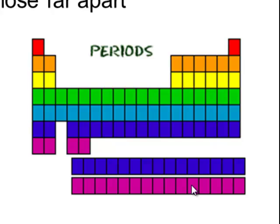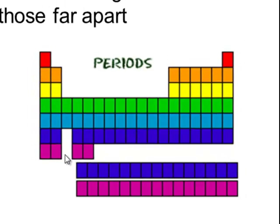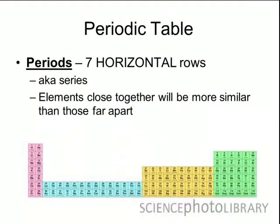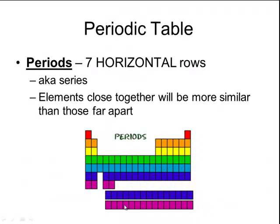And notice that those blue and purple rows correspond to these same blue and purple rows right here, and that's because they actually get inserted right into this blank space. That would actually make the periodic table a lot wider than you normally see, but we condense it by moving those two rows below the periodic table to save space. When you look at the periods on the periodic table, any elements that are close together are going to be very similar, and any elements that are far apart are going to be very different from each other.